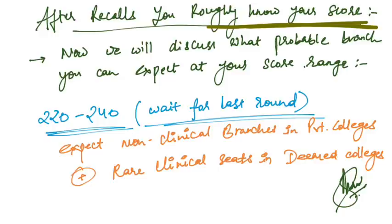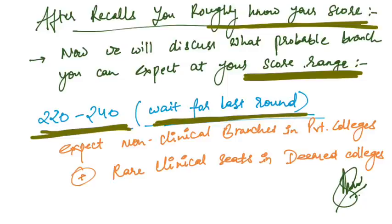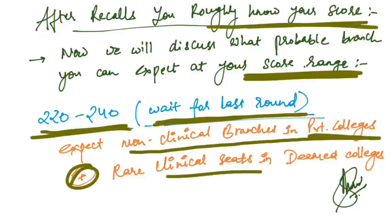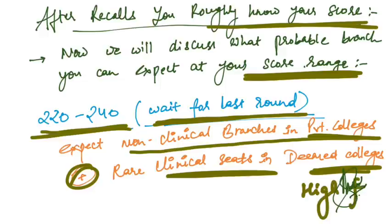If your score range is around 220 to 240, you can wait for the last round. You can expect non-clinical branches in private colleges and rare clinical seats in deemed colleges with high fee structure. Clinical seats you can expect here are like anesthesia.